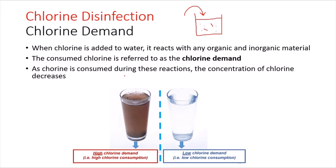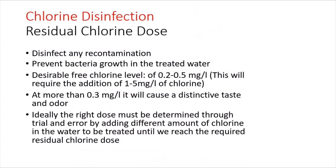As chlorine is consumed, its concentration decreases. So the chlorine demand is the amount of consumed chlorine when added to the water. Note that a highly polluted water will require more chlorine, so we will have a higher chlorine demand compared to clean water.